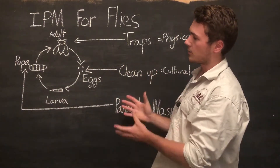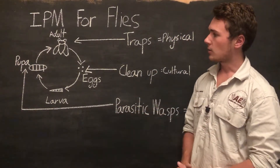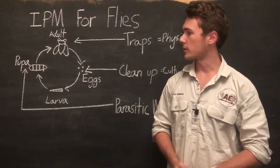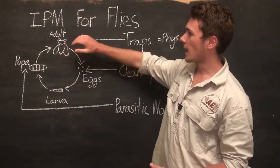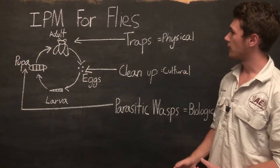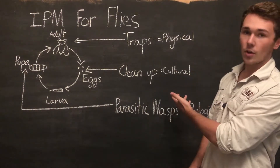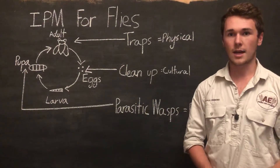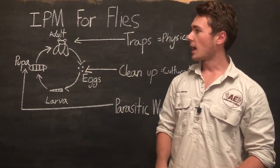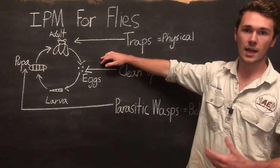We're going to look at different features of this life cycle, the weaknesses at different stages, and think about ways we can attack these points. Starting with the adult fly — we can set traps, such as sticky traps or fly traps. This is a physical control method to control adult flies. It will reduce the number of adult flies and consequently reduce the amount of eggs produced.